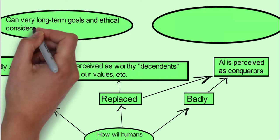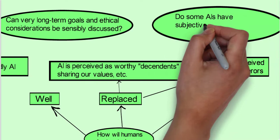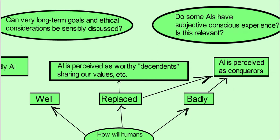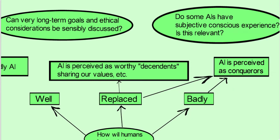He then kind of looks at two big questions at the very end of the book. And one is, can very long-term goals and ethical considerations be sensibly discussed? And the other one is, do some AIs have subjective consciousness experience? And is that even relevant? Does an AI need to have subjective conscious experience? And why does it matter? And these are the questions that we're going to look at as we look into the rest of the other parts of Tegmark's book.